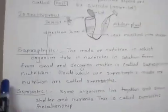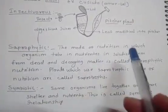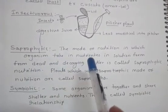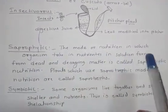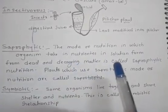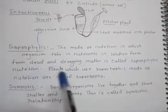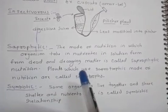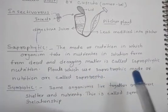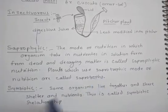Now we are going to discuss saprophytic and symbiotic plants. Saprophytic nutrition is the mode of nutrition in which organisms take in nutrients in solution form from dead and decaying matter. Plants which use this saprotrophic mode of nutrition are called saprotrophs.